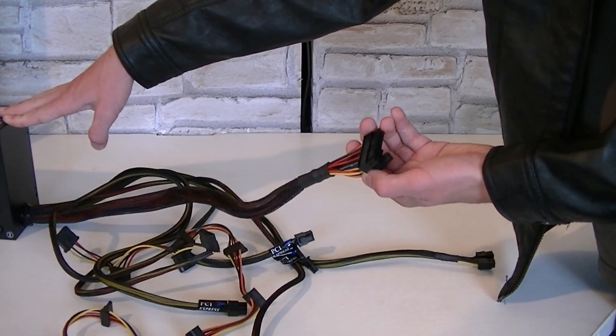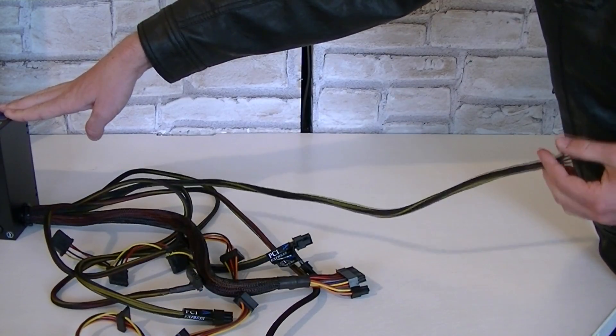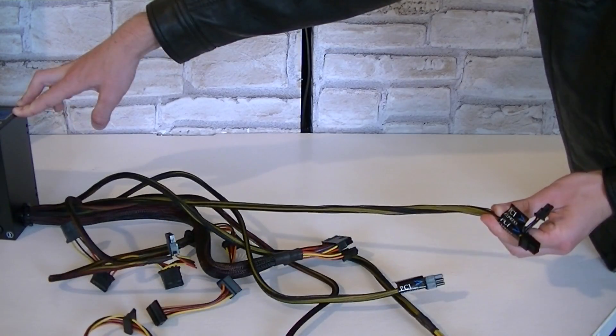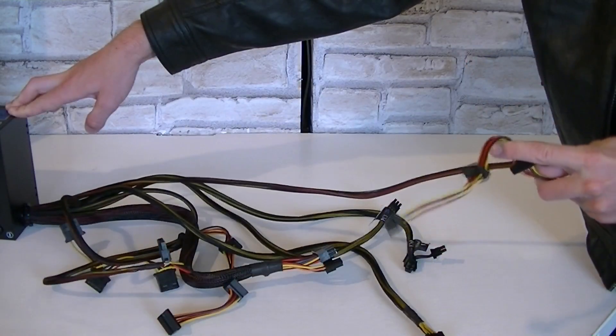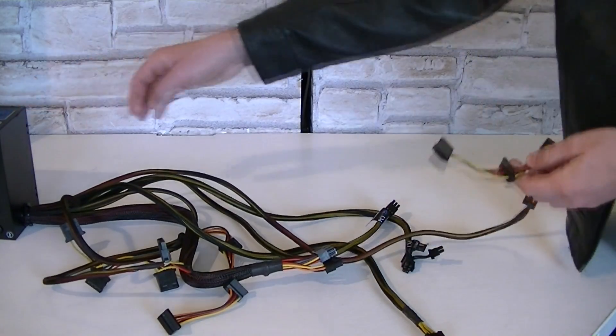Now I'd like to show you the cable length. Here's the 20 plus 4 pin connector. Here's the 4 plus 4 pin ATX 12 volt power connector. The PCIe 6 pin connector. The PCIe 6 plus 2 pin connector. Here's one cable with SATA connectors which is very very long. I've never seen such a long one before but that's great.